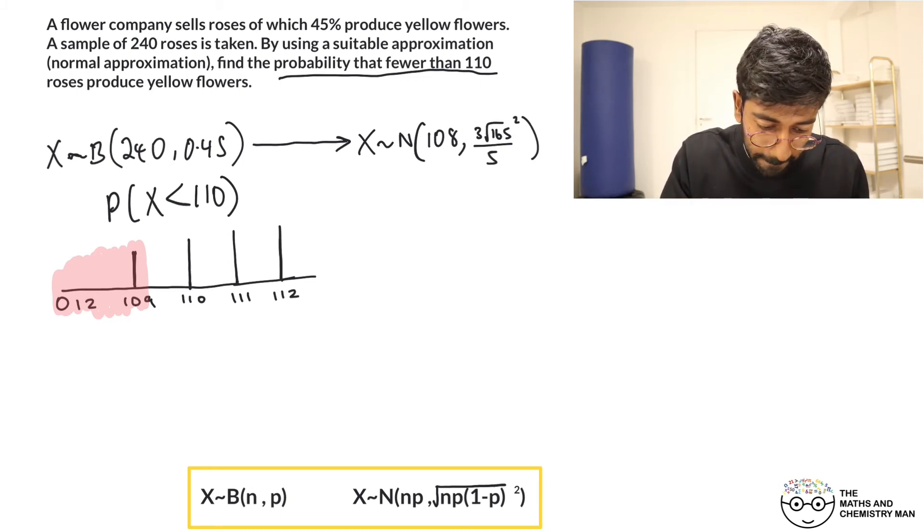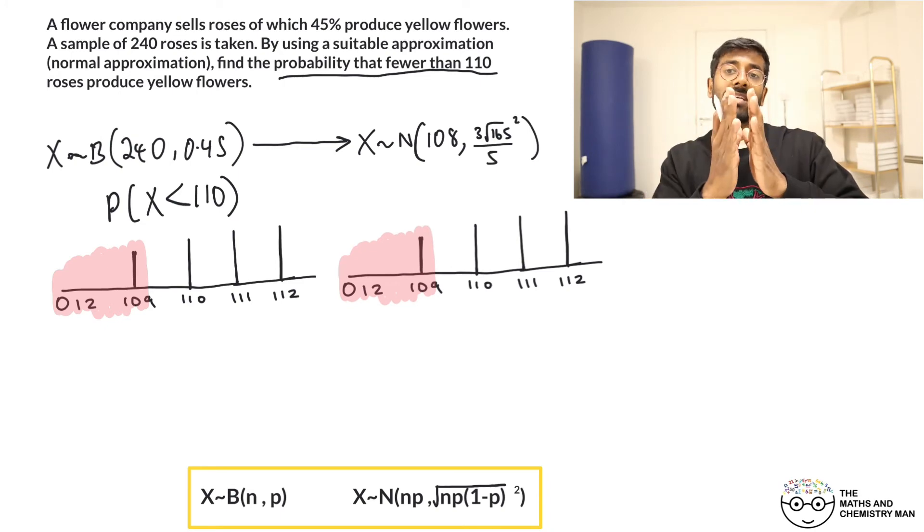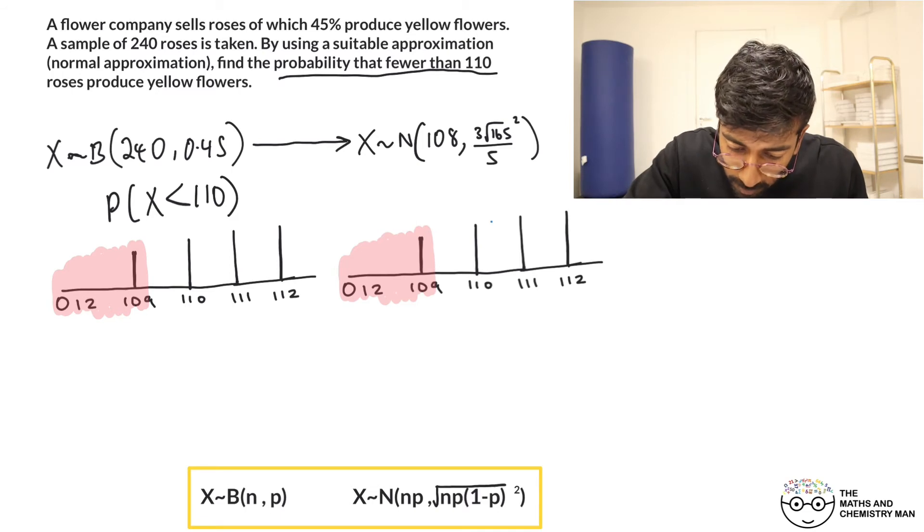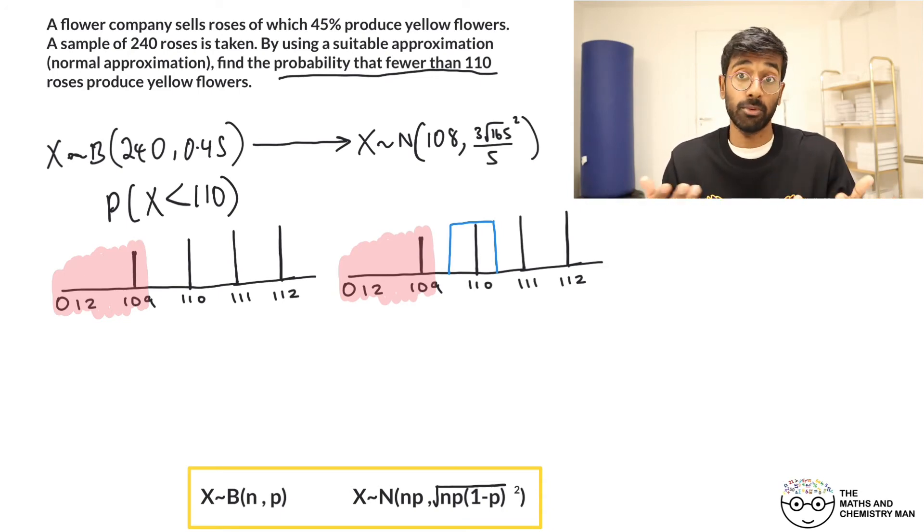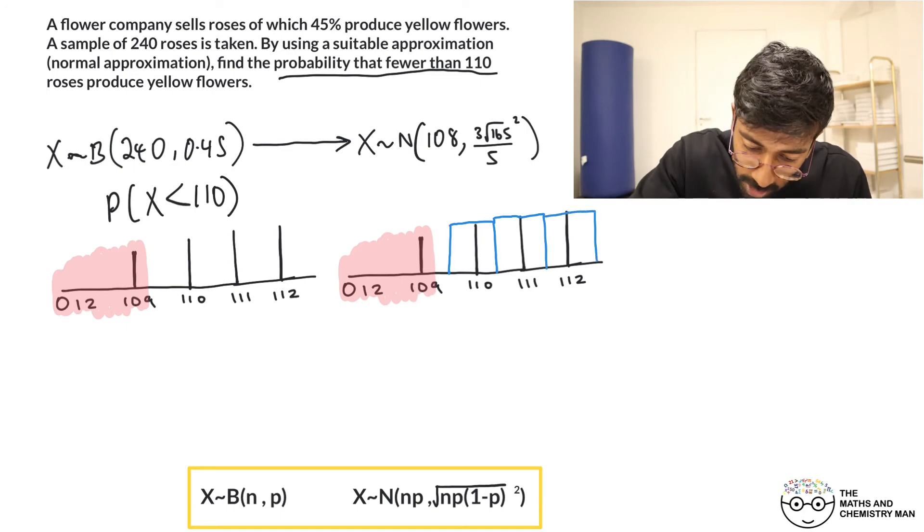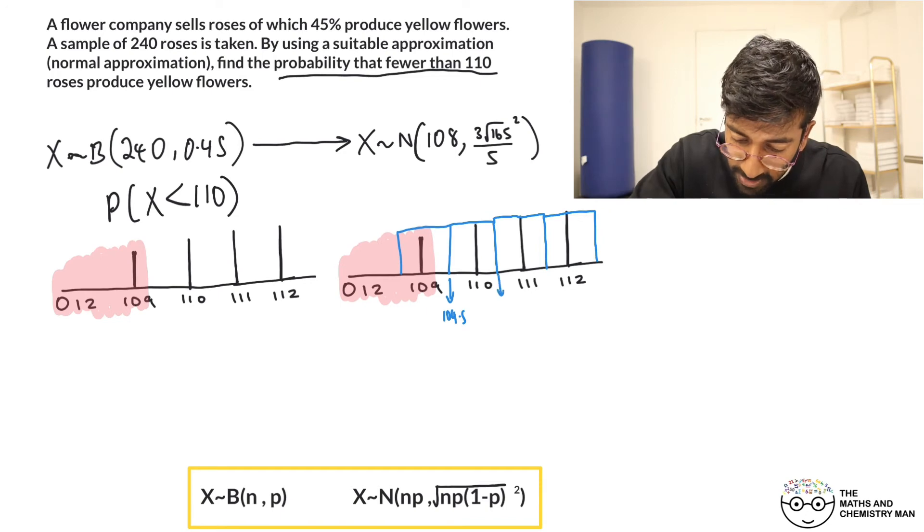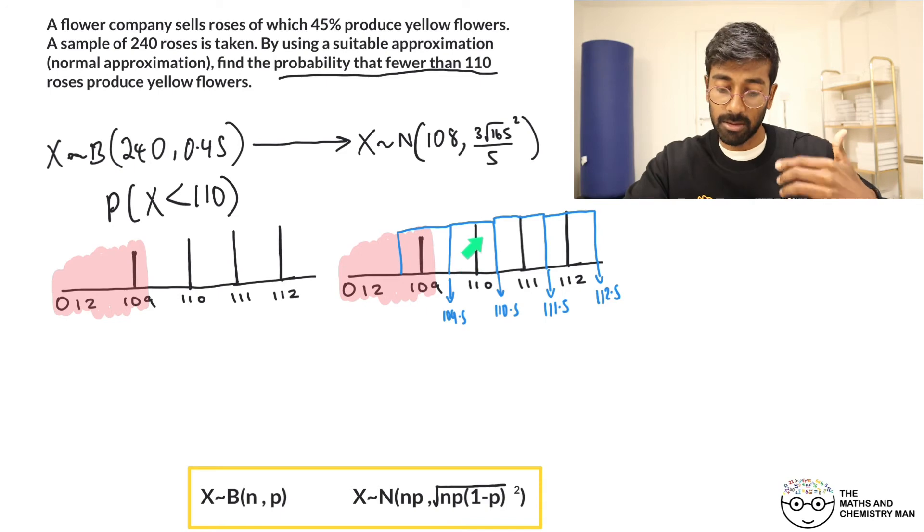And so this here changes very, very slightly. So let's just make a copy of this. So now for our normal distribution what happens is because it's continuous the bars have to stretch out, because a continuous distribution can have any value. So technically you could have 109.5 or 109.2 or 110.1. So what we've got to do is account for that. So now we're going to stretch these bars out, and they go half a unit either side. So this value in the middle is actually 109.5, this value here is going to be 110.5, this one here 111.5, and this one here 112.5. You get the gist of it.